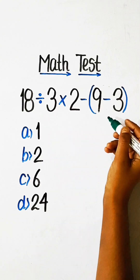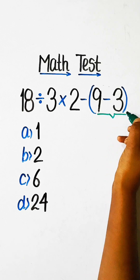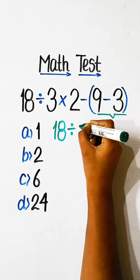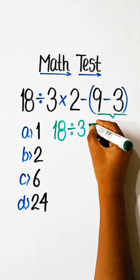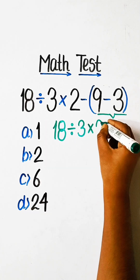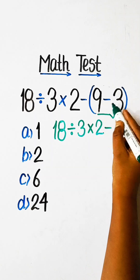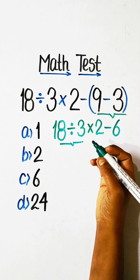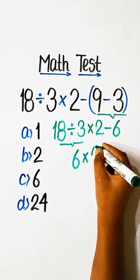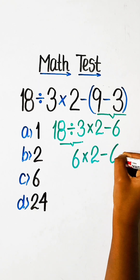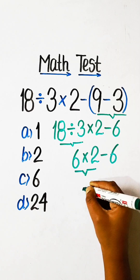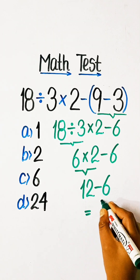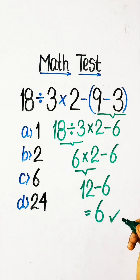So it's time to solve this. First of all, we have to solve the bracket part. So we can write here: 18 divided by 3, multiplied by 2, minus 9 minus 3 is 6. 18 divided by 3 is 6, multiplied by 2, minus 6. 6 multiplied by 2 is 12, minus 6. 12 minus 6 equals 6. So 6 will be our correct answer.